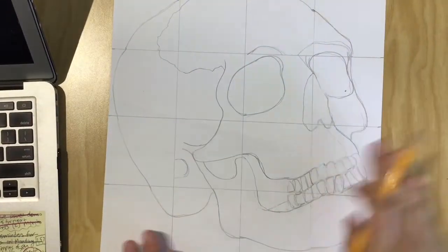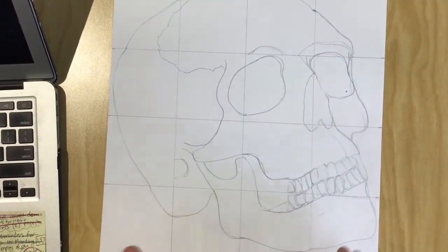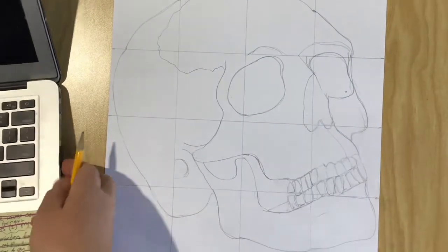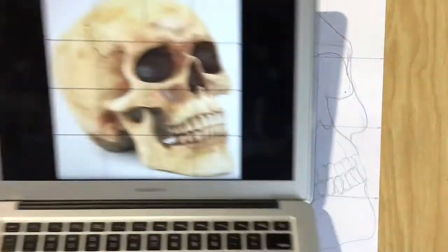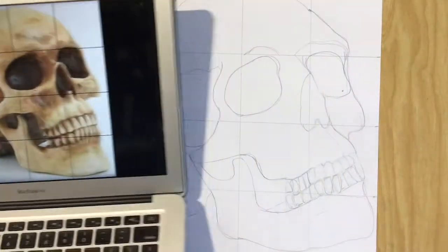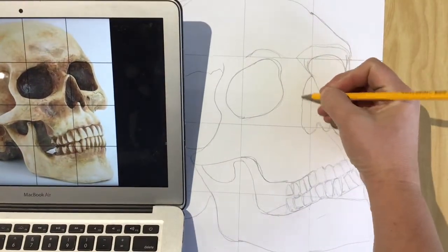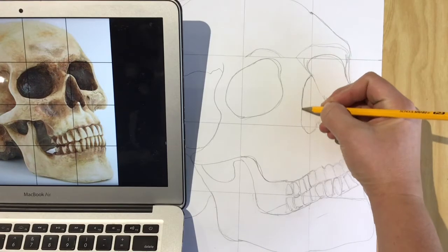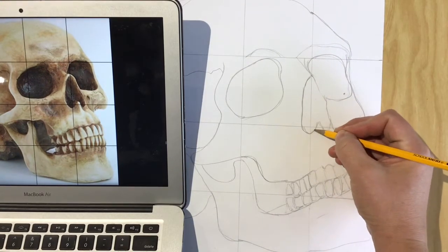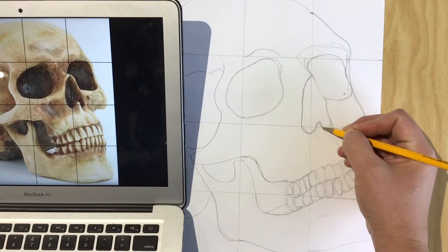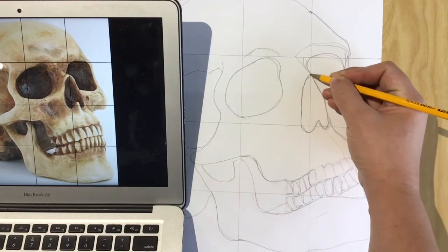So after you kind of map out each box, then you can start to look at it as a whole image. So now I'm going to compare my drawing to my image and try to see what I need to adjust and what other details I might need to add and see it more as a whole instead of box by box.